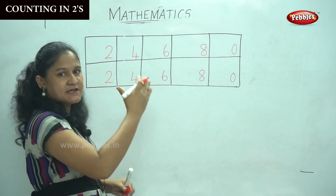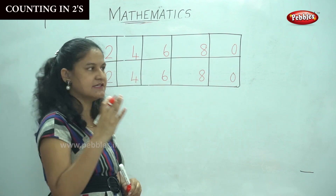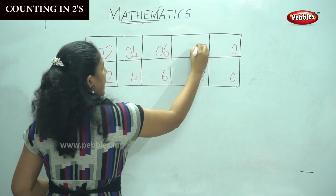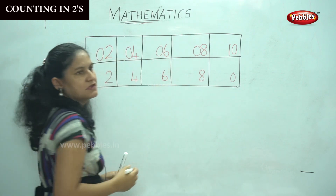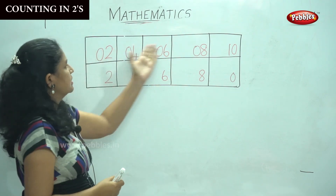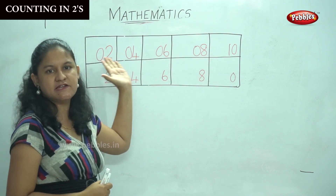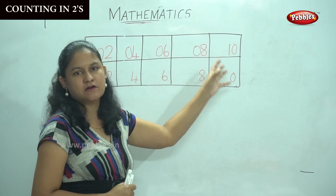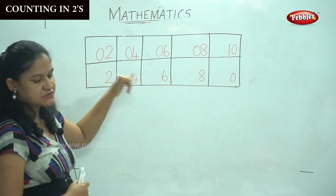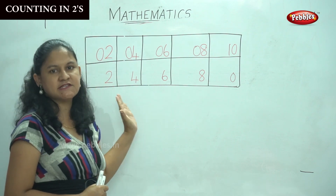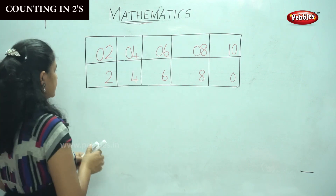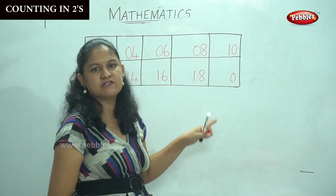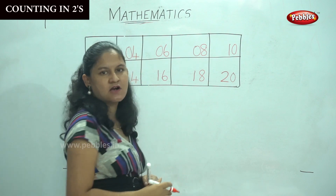In the last column we write zero in all columns except the last column, which will be one. So we write zero, zero, zero, zero, and only in the last column we write one. In the first row, in the tens place we write zero against all numbers except the last column where we write one: zero, zero, zero, zero, and one. When we move on to the next row, in the tens place we write one in all columns: one, one, one, one, and in the last box we write two.